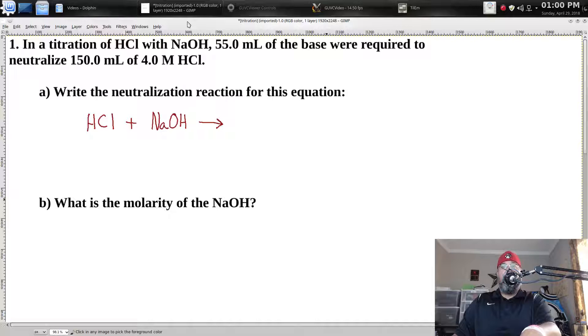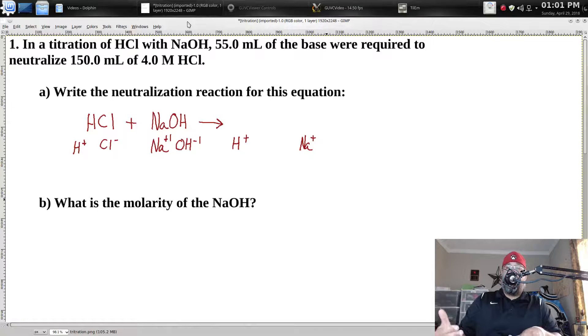Now, what we need to do is figure out the products. We know it's got to be water and the salt, and we probably could eyeball this and get it right away. But what we really need to do is we need to really look at the ions that are involved here. So what we're going to do is we're going to break these acids and bases down into their ions. A hydrogen ion is H plus 1. A chloride ion is Cl negative 1. Sodium is Na plus 1. And hydroxide is OH negative 1.